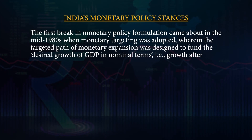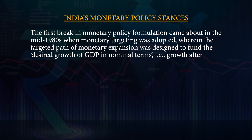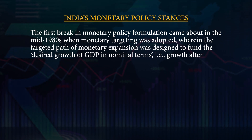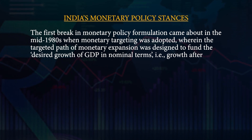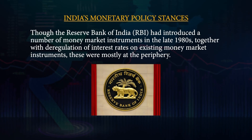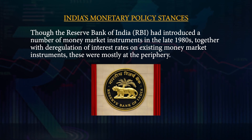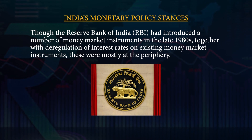Inflation was mainly dominated by structural shocks like floods, droughts, or changes in oil prices. The first break in monetary policy formulation came around in the mid-1980s, when monetary targeting was adopted, wherein the targeted path of monetary expansion was designed to fund the desired growth of GDP in nominal terms — meaning growth after accounting for a tolerable level of inflation in the economy. Throughout these processes, the RBI had introduced a number of money market instruments in the late 1980s, together with deregulation of interest rates on existing money market instruments.